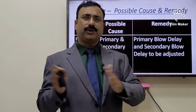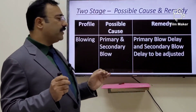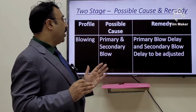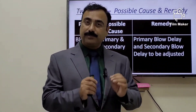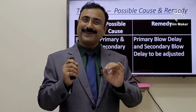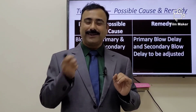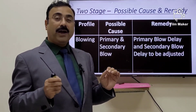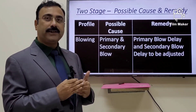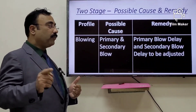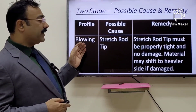For the blowing stage, it doesn't matter whether you are at single stage or two-stage — blowing is similar in both, with only minor differences the operator can manage. In blowing, there is primary blow and secondary blow delay. In machines like ASB 07 and 08, or SIDEL KSB 21 and 23, these timers for primary and secondary blow delay are used to correct wall thickness variation.